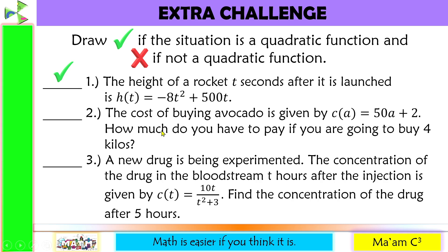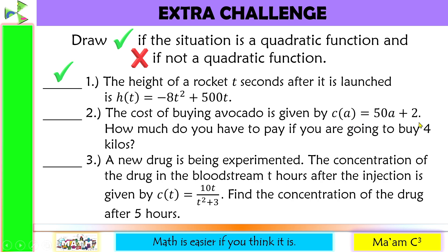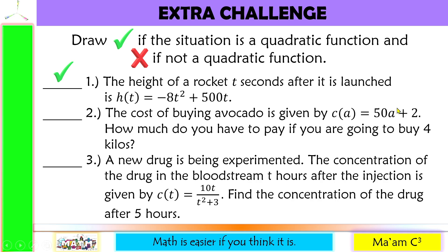Next, the cost of buying avocado is given by c of a equals 50a plus 2. We have the dependent variable, equal sign, and independent variable, but the exponent is only 1 — so this is not a quadratic function.